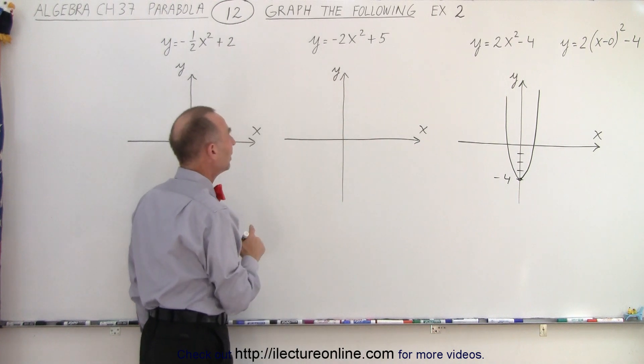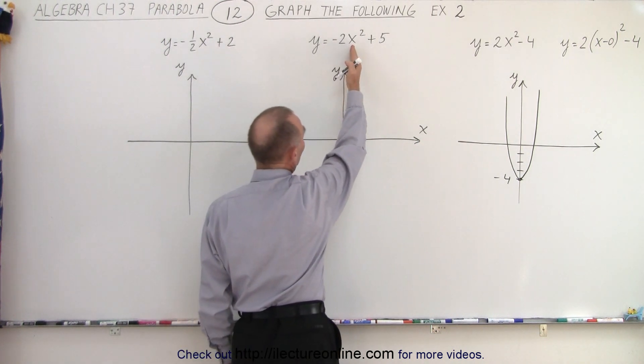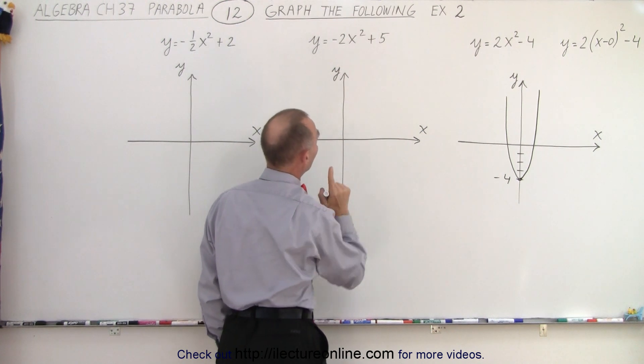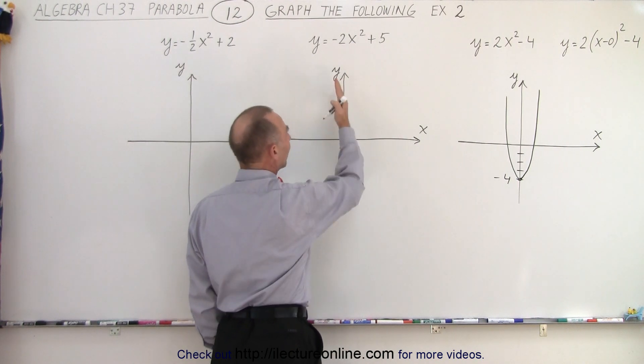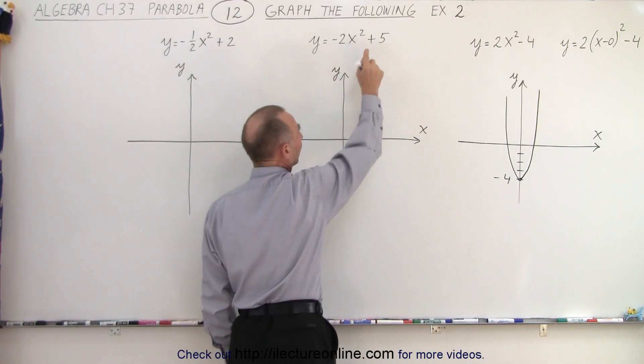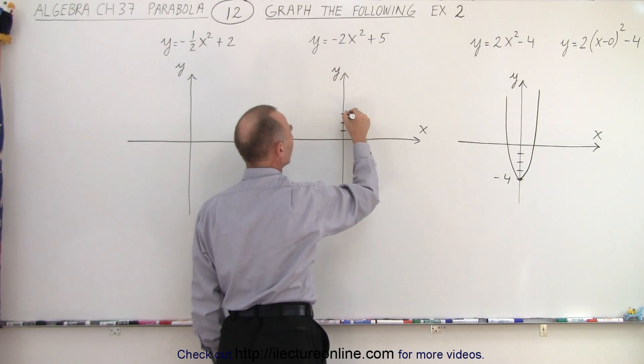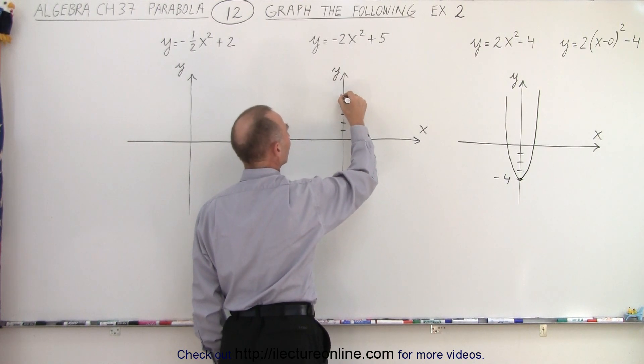Alright, next we have this one. We can again think of it as being not shifted left or to the right because it's minus 2x squared. There's no middle term and there's just a constant. So that means that the vertex will be on the y-axis 5 units above the origin. 1, 2, 3, 4, 5. There's the vertex.